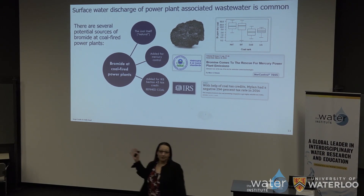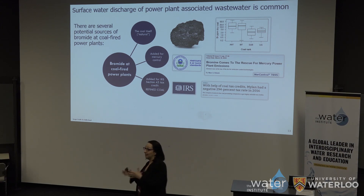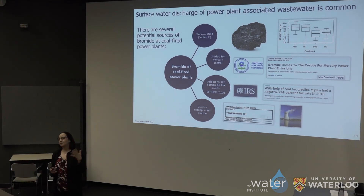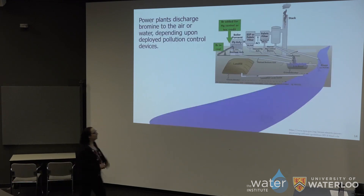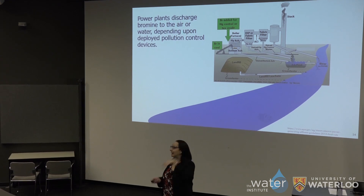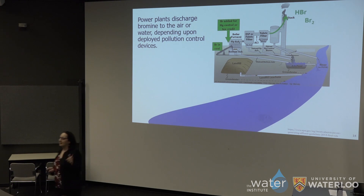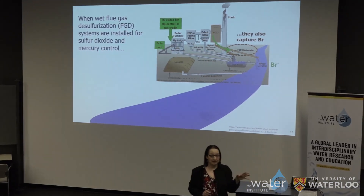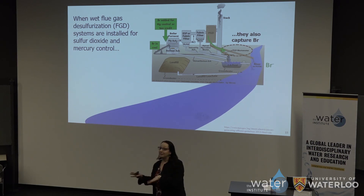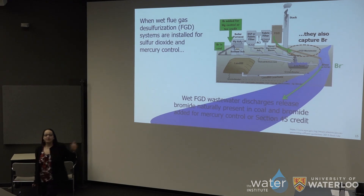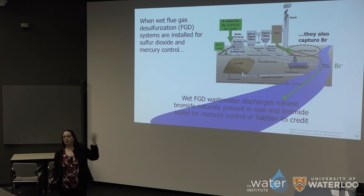Bromide is also sometimes added to cooling tower water because bromine as a disinfectant is more stable than chlorine at high temperatures. You might think that bromide applied to the coal would simply go up the stack — and you would be right. HBr and Br₂ are released through the stack unless you've deployed a flue gas desulfurization (FGD) system to control sulfur dioxide and acid rain. If you add bromide for mercury control and then add a wet FGD scrubber, the scrubber captures the sulfur and also incidentally and unintentionally captures the bromide. In systems applying flue gas desulfurization and adding bromide, all of that bromide ends up in the river.